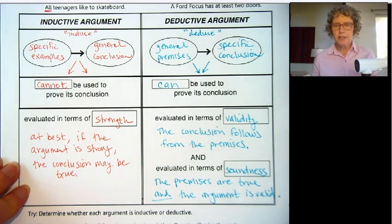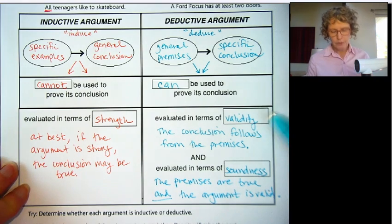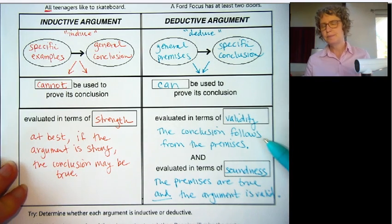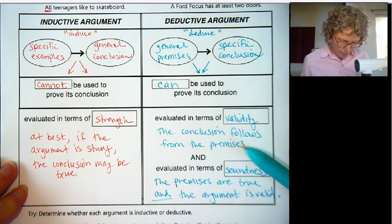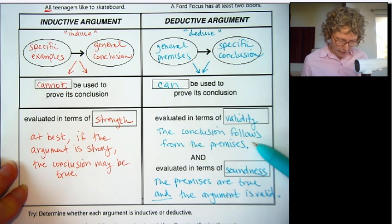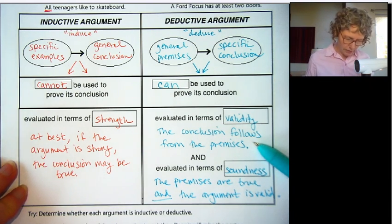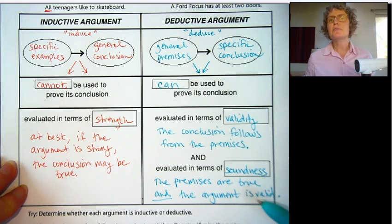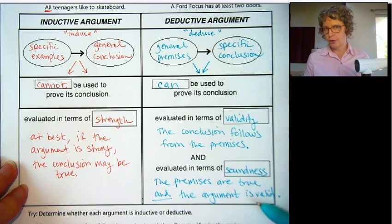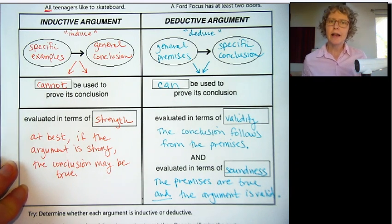If the argument isn't valid, we can really stop there — if it's not valid, it can't be sound. But if it is valid and the conclusion follows, then we need to check: are the premises true? If so, then it is a sound argument.